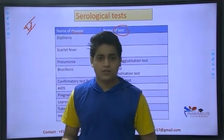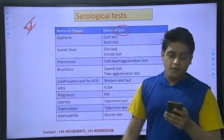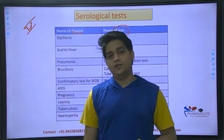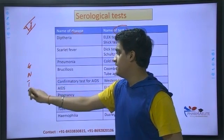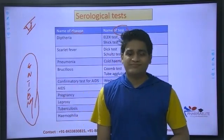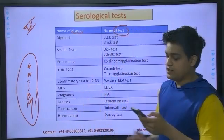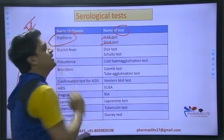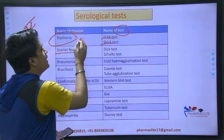Alkaline phosphatase, horseradish peroxidase — there is a link there. Going to serological tests, followed by ADR, then a few chelating agents and poisoning topics. Scarlet fever has been a favorite part for GPAT and NEET. The Dick test has been used for identification of scarlet fever.